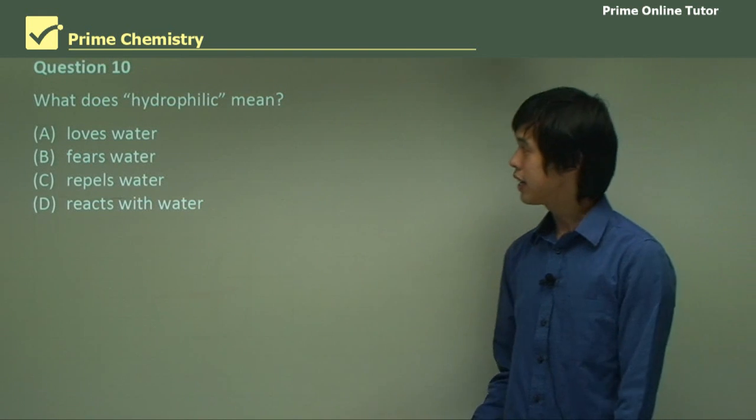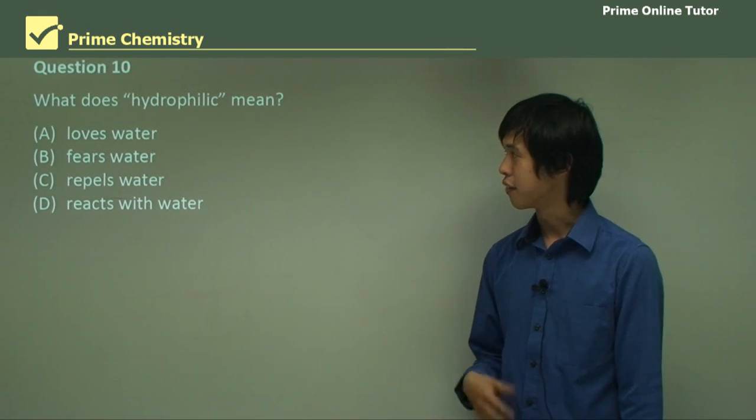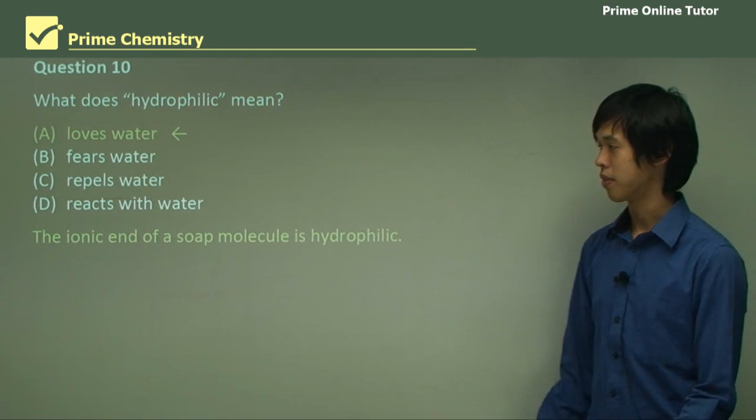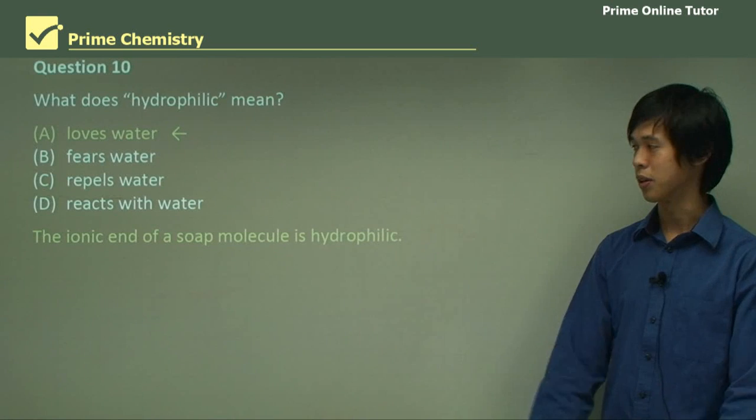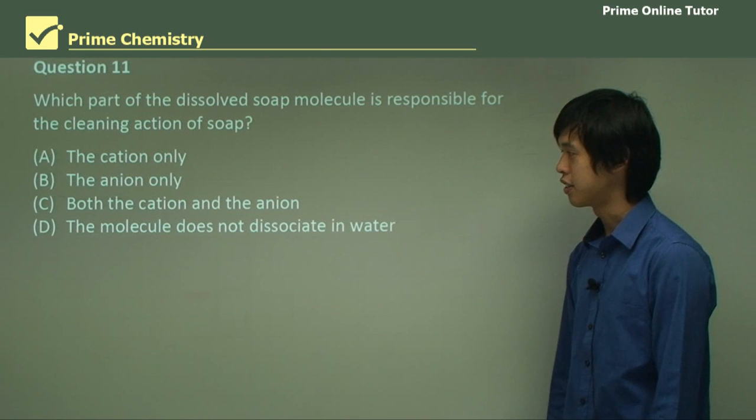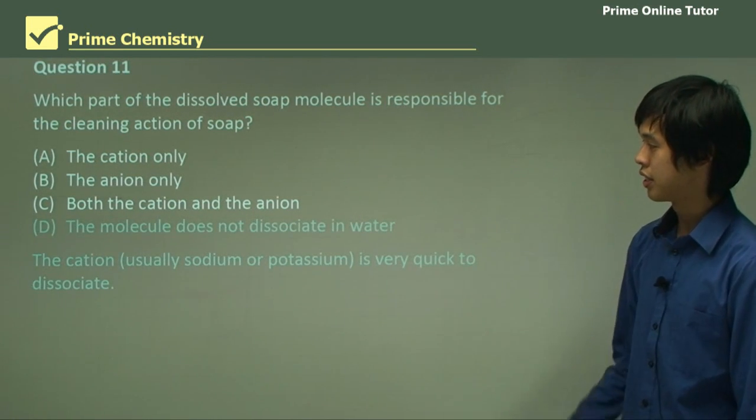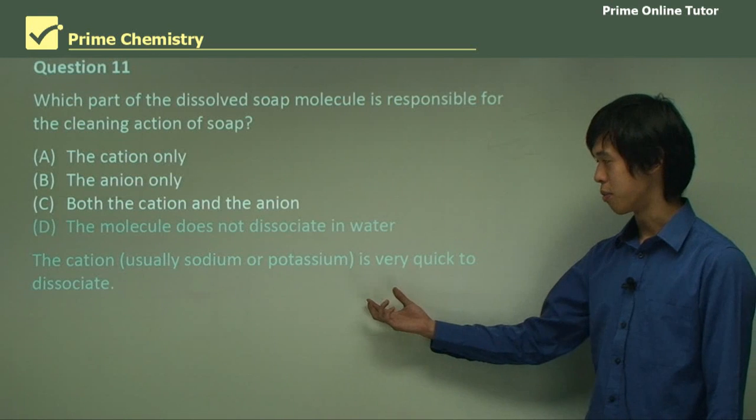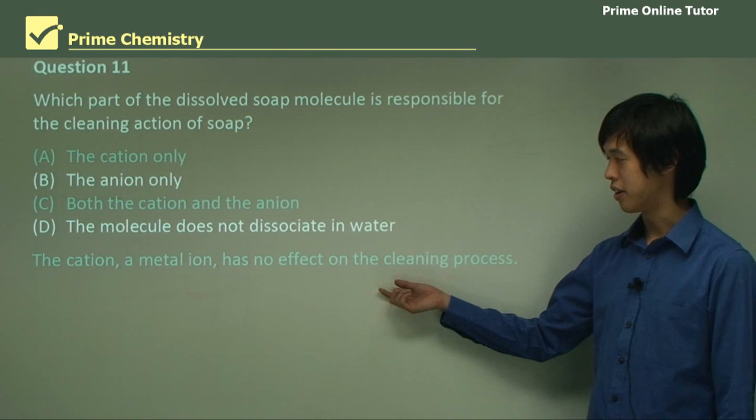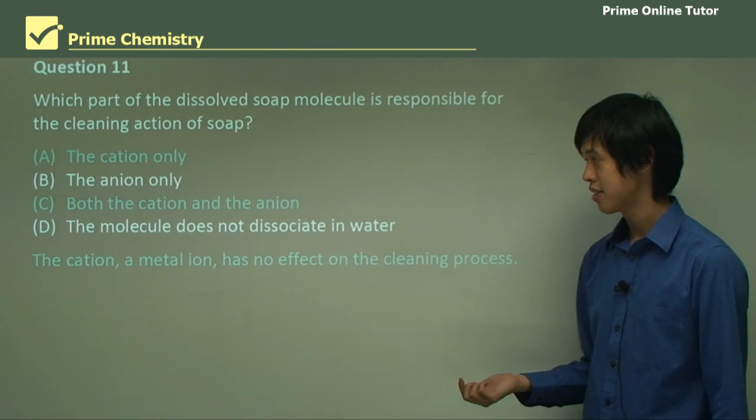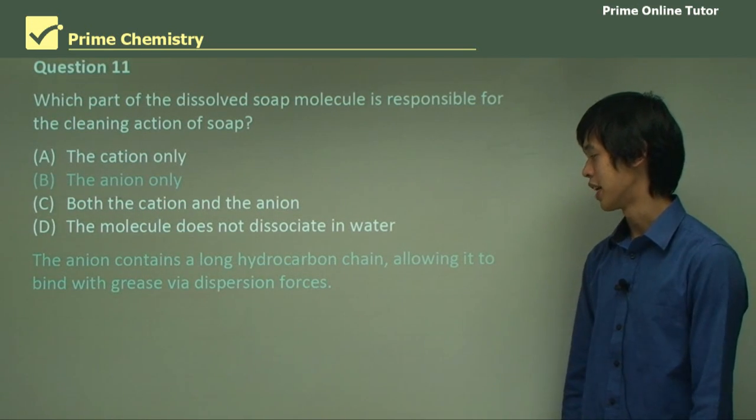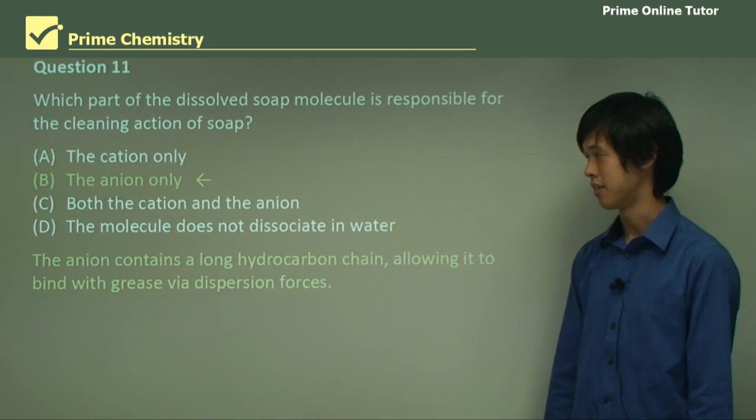Firstly, what does hydrophilic mean? Hydro means water, and philic means love. It loves water. The ionic end of a soap molecule is hydrophilic—it likes water. Which part of the dissolved soap molecules is responsible for the cleaning action of soap? The cation, usually sodium or potassium, is very quick to dissociate, so it doesn't do anything. The cation, a metal ion, has no effect on the cleaning process. The only one is actually the anion, the negative charge. The anion contains a long hydrocarbon chain, allowing it to bind with grease via dispersion forces. That's our answer.